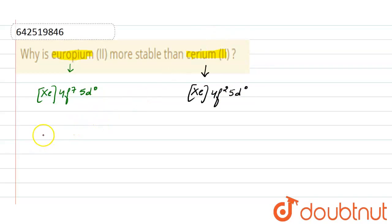Since half-filled and fully-filled electronic configurations are more stable, that is why europium in plus 2 state is more stable than cerium in plus 2 state.